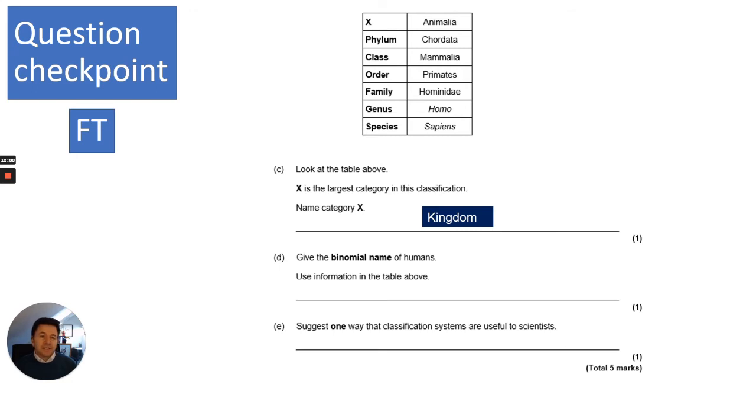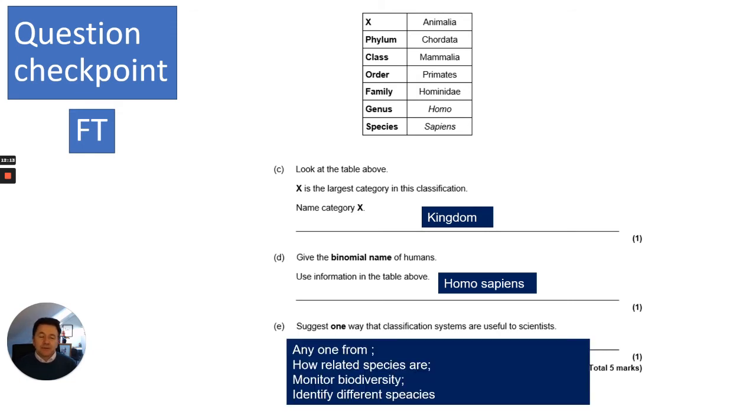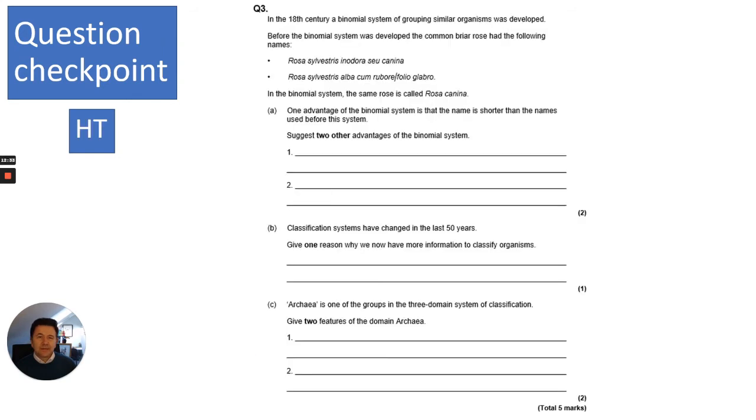The table from before is the same table. It says X is the largest category in this classification. You've got to name category X. That's where my mnemonic will come in handy. I said king prawn curry or fat greasy sausage, so K is for kingdom. Give the binomial name of humans using the information in the table above. You might already know that because I've told you the genus is Homo and the species is sapiens, so it will be Homo sapiens. Suggest one way that classification systems are useful to scientists. They allow you to look at how related species are, it allows you to monitor biodiversity, and it also allows you to identify different species.